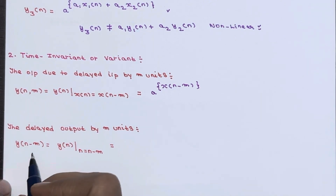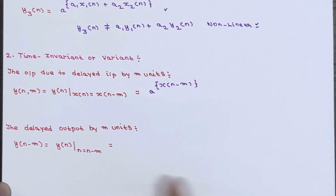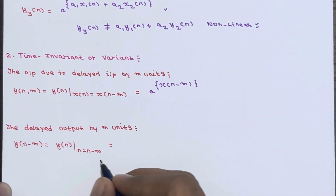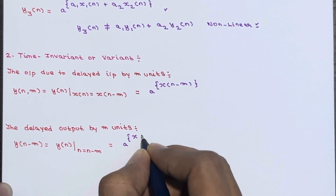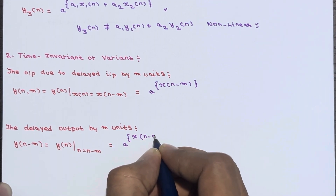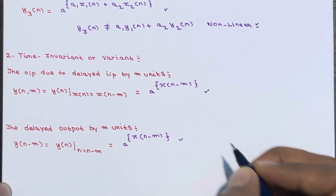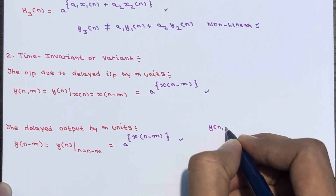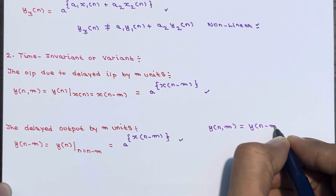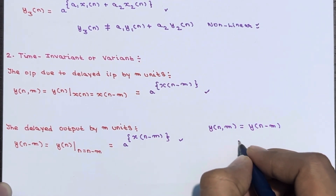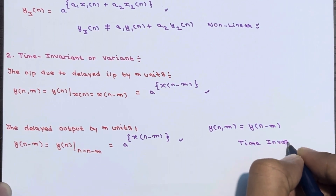Now calculating y(n−m): replacing n by n−m in the original output gives a^x(n−m). These two results are the same, meaning y(n,m) = y(n−m). So we can say our system is a time invariant system.